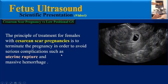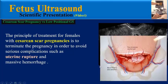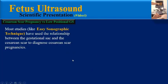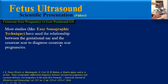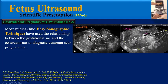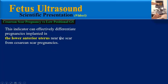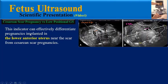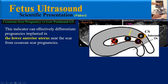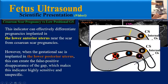The principle of treatment for females with caesarean scar pregnancy is to terminate the pregnancy in order to avoid serious complications such as uterine rupture and massive hemorrhage. Most studies, like the easy sonographic technique, have used the relationship between the gestational sac and the caesarean scar to diagnose caesarean scar pregnancies. If the gap between the sac and the scar vanishes, this is taken to mean that the sac is implanted into the scar. However, when the gestational sac is implanted in the lower posterior uterus, this can create a false positive disappearance of the gap, which makes this indicator highly sensitive but unspecific.